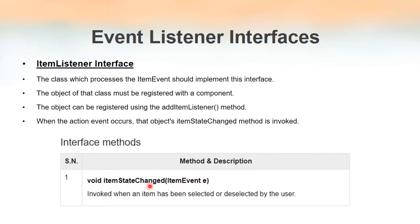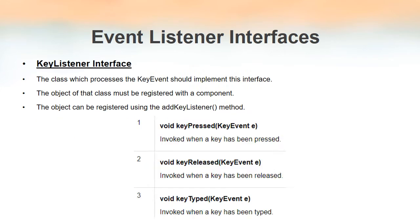The parameter of the itemStateChanged method is an ItemEvent object. When an item event occurs, the object of that class will be created, and since the listener is registered, the method itemStateChanged inside the ItemListener interface will be invoked automatically and the ItemEvent object will be passed as the parameter. We can write all the lines of code that need to be performed when such an event occurs inside this method.